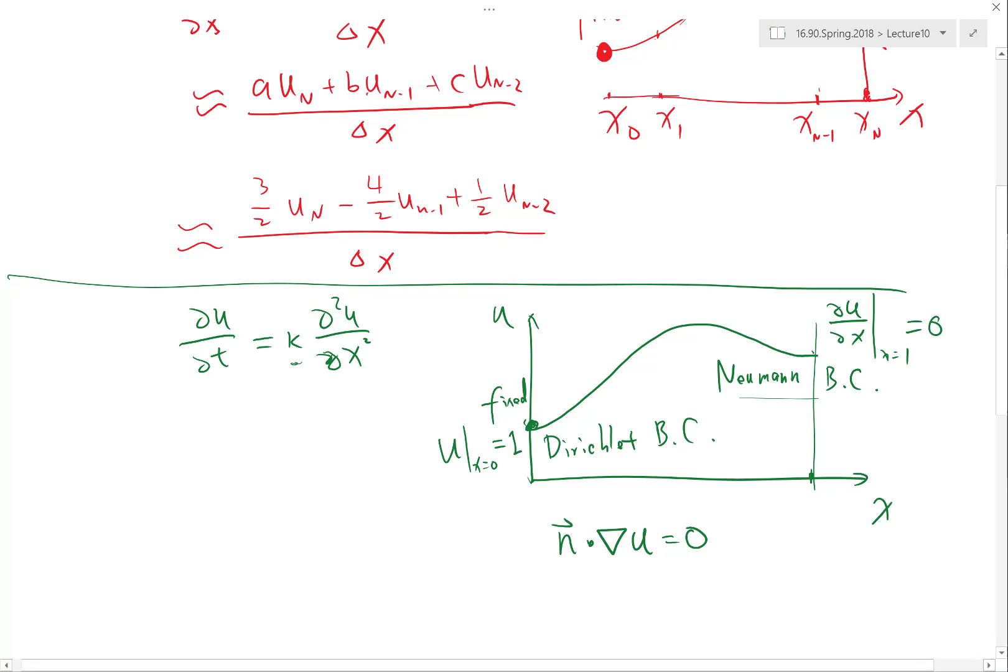How about a Neumann boundary condition? That's not so easy, right? Although we know du/dx, we actually don't know the value of u at that point. It's still unknown what the value of u is. So what do we do?